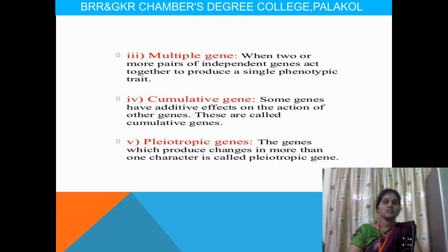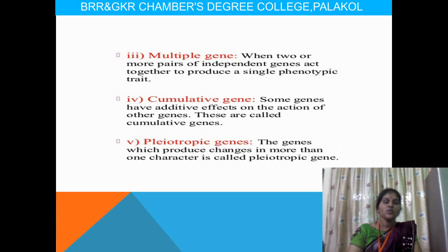Cumulative genes are genes that have effects on the action of other genes — if one gene influences or affects another gene. The next is pleiotropic genes. Pleiotropy means one gene can characterize or symbolize three different characters. Pleiotropic genes are genes which produce changes in more than one character.